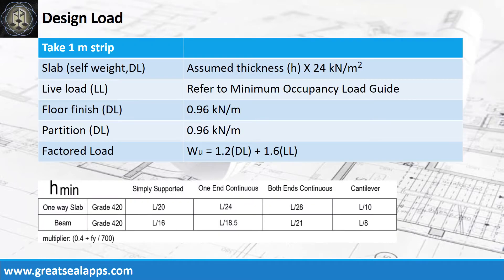Sum up all the dead load from self-weight of slab, floor finish, and partition if any, then get the live load from minimum occupancy load guide to get the factored load. Check the assumed slab thickness for deflection control as per ACI code.